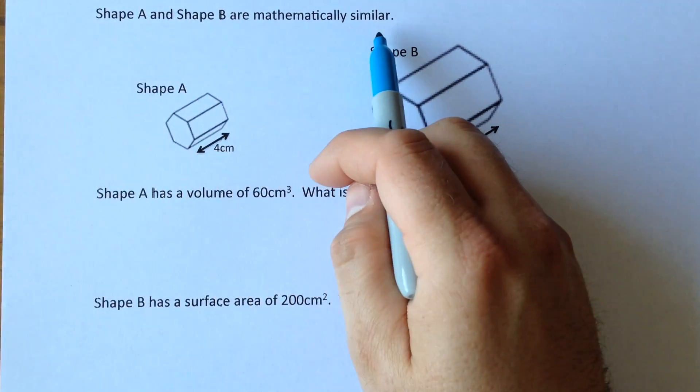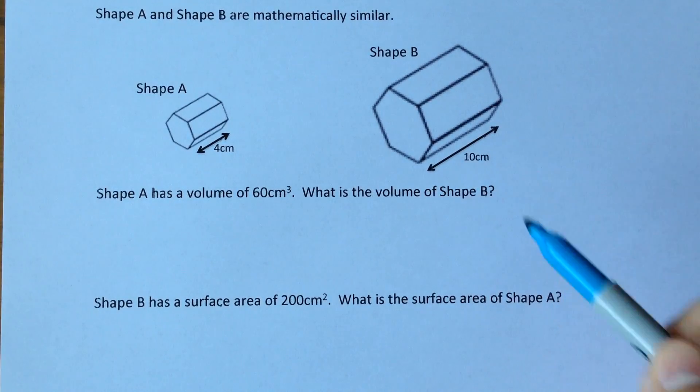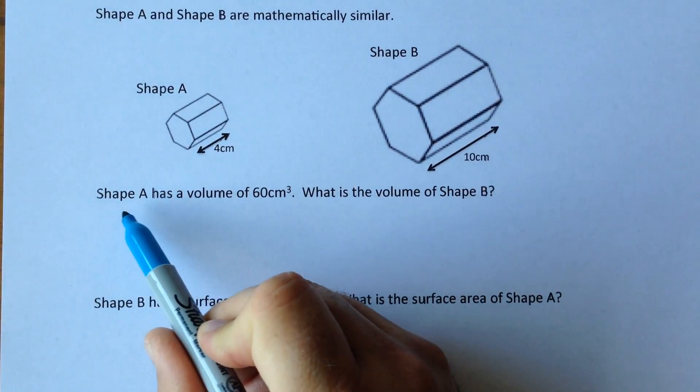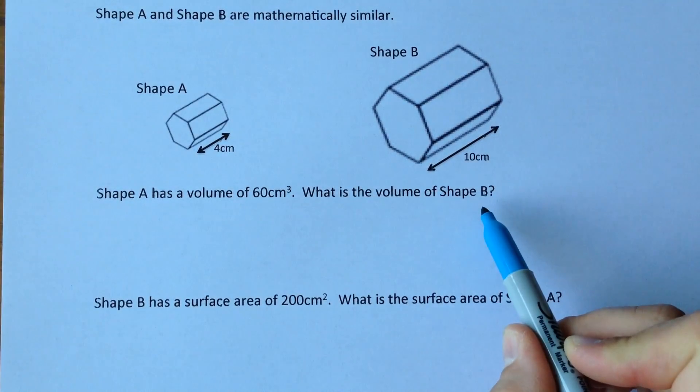Shape A and Shape B are mathematically similar. Shape A has a length of 4cm, Shape B 10cm. We're told Shape A has a volume of 60cm³. What is the volume of Shape B?